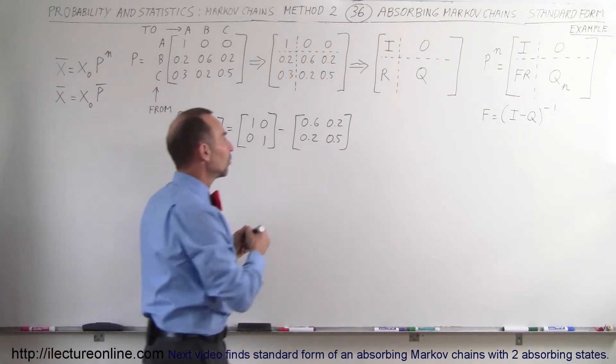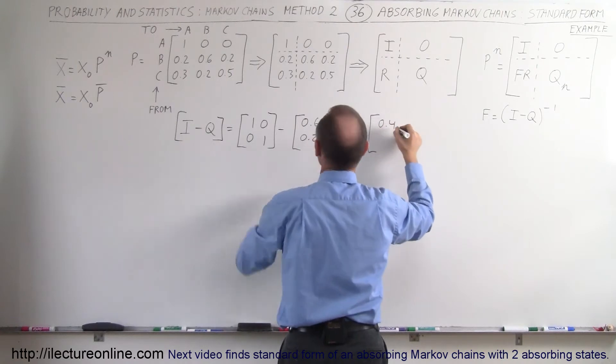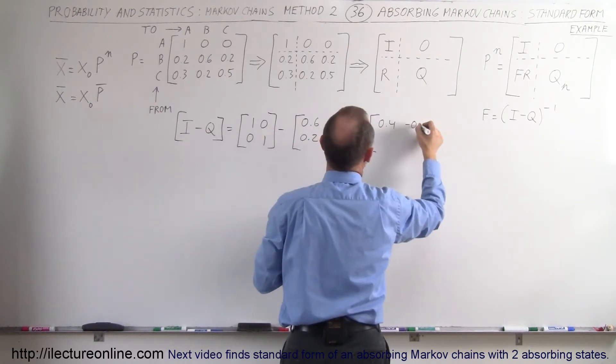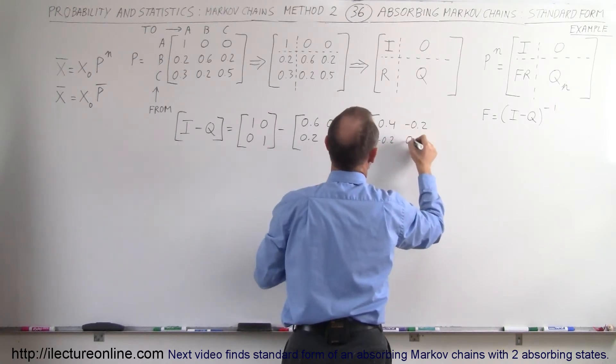So when we take the difference of those two matrices we end up with 1 minus that which is 0.4, 0 minus that is minus 0.2, here we get minus 0.2 and 0.5.